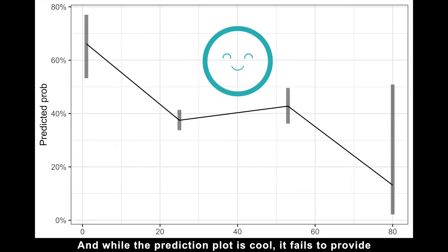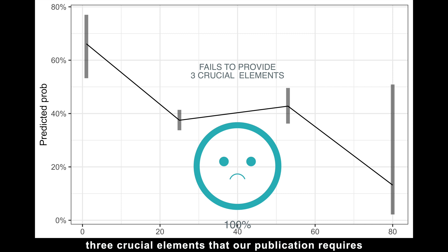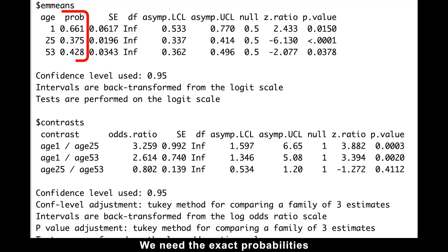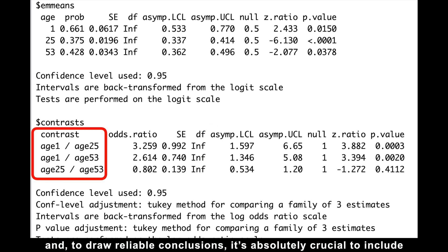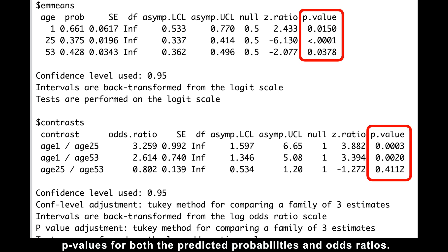And while the prediction plot is cool, it fails to provide three crucial elements that our publication requires whenever we conduct logistic regression. We need the exact probabilities along with their 95% confidence intervals. We need odds ratios with their confidence intervals to demonstrate the age-related differences. And to draw reliable conclusions, it's absolutely crucial to include p-values for both the predicted probabilities and odds ratios.